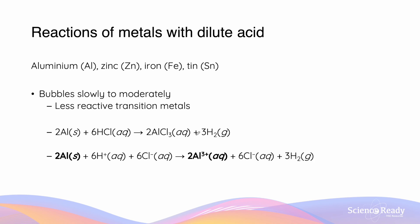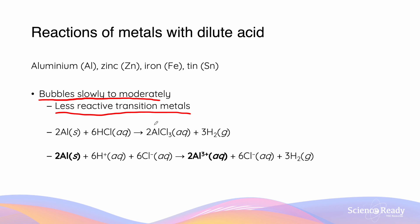Aluminium, zinc, iron, and tin will all react with dilute acid to produce a salt and hydrogen gas. Slow bubbling will indicate the formation of hydrogen gas. However, because they are transition metals, they are less reactive and will bubble more slowly. We can compare reaction rates qualitatively by observing the bubbling of gases produced in the reaction vessel. Aluminium, when reacted with hydrochloric acid, will form the aluminium ion.